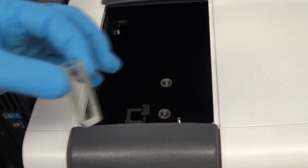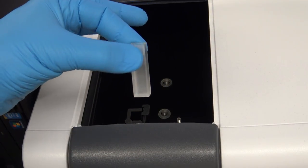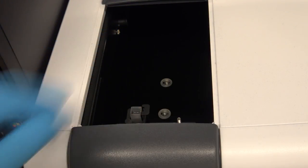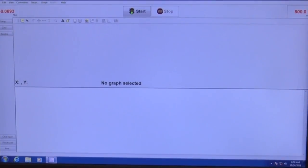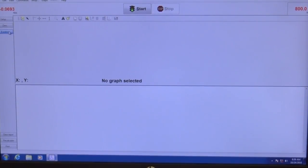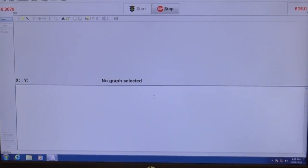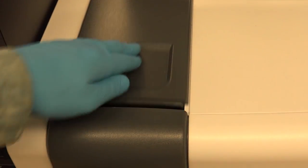Let's blank the instrument now using that blank that we created. We'll slide the compartment cover back, placing the cuvette containing our blank solution into the holder. Notice that the clear transparent sides are pointed left to right and that the ground translucent sides are front to back. At this point, we're ready to blank the instrument. We'll go down to the baseline and click OK. The sample is now running an experiment on that solvent and determining exactly what the transmittance of that solvent is and then setting it to 100%.